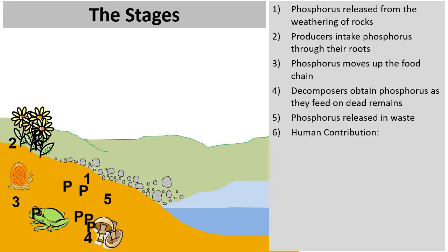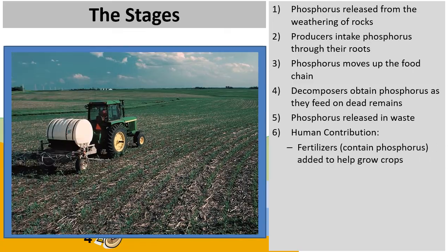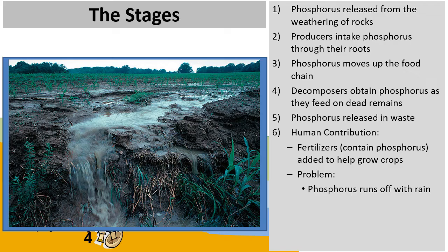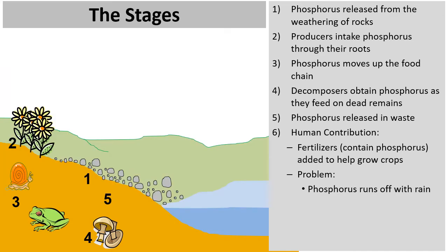Now let's focus on the human contribution to the phosphorus cycle. The phosphorus cycle is a bit out of balance, and here's the reason why. Through the use of fertilizers, which often contain phosphorus to help crops grow, phosphorus and other fertilizers are spread around fields and crops around the world. The problem is that when it rains, the phosphorus and other chemicals can be washed away.